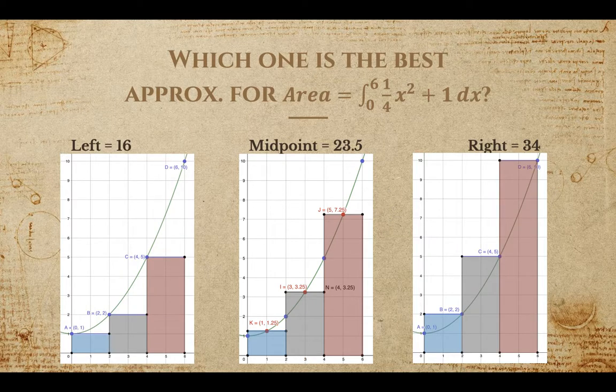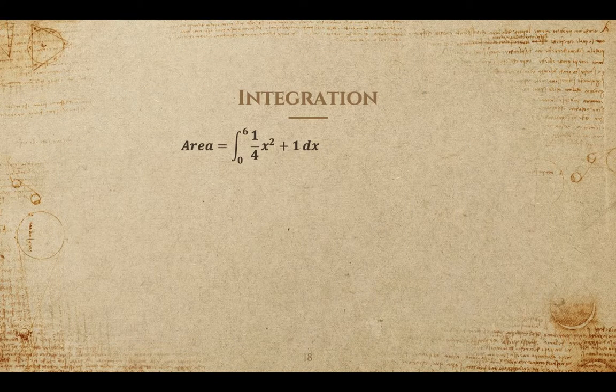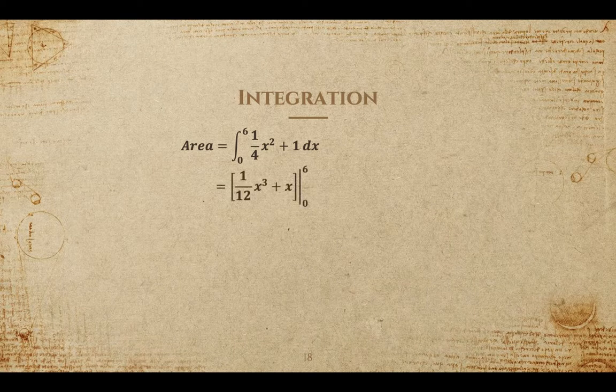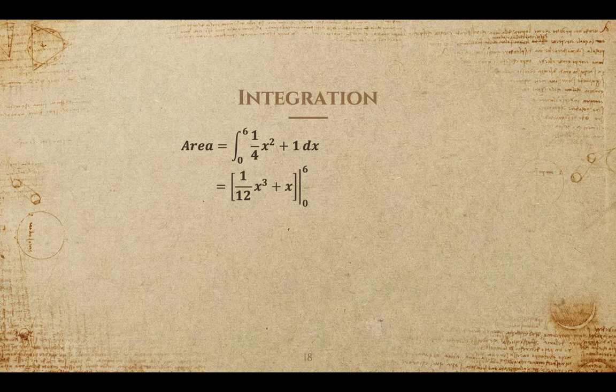Comparing these three methods, which do you think the best approximation is? We will go through evaluating the integral to determine which was the closest. So here's a quick throwback to calc 1, for those who don't remember. We'll be using the power rule to find the antiderivative of our function and evaluate it from 0 to 6.